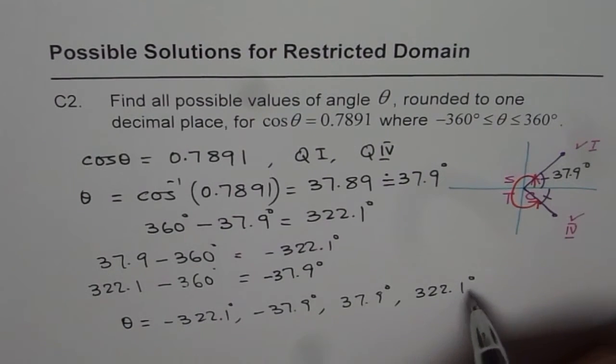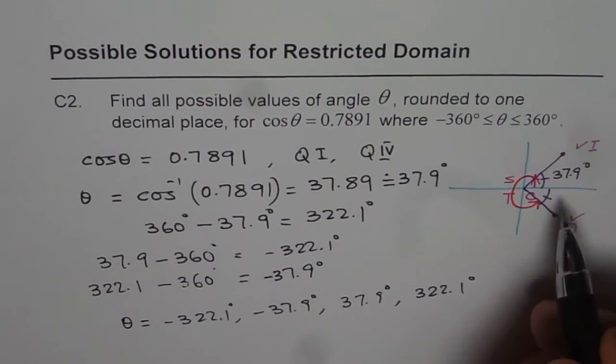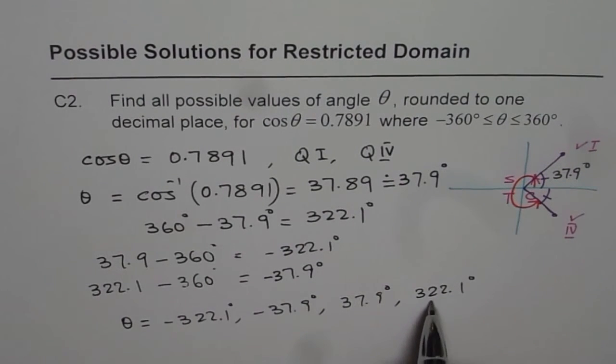So we could have started with plus and minus 37.9 degrees. And then if you take away 360 degrees, you will get the other two answers as plus and minus 322.1 degree. So anyway, this is the way we can do it.